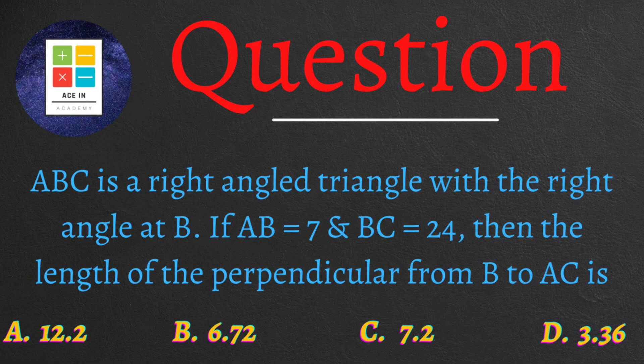The question is as follows: ABC is a right angle triangle with the right angle at B. If AB equals 7 and BC equals 24, then the length of the perpendicular from B to AC is...